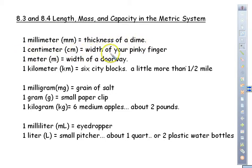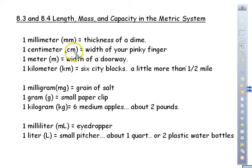One centimeter is about the width of your pinky finger — where your fingernail is, that's about a centimeter wide. There are ten millimeters in one centimeter, so if you took ten dimes and stacked them next to each other, that would be one centimeter. One meter, abbreviated m, is the width of a doorway — the doorway in our classroom is about one meter.